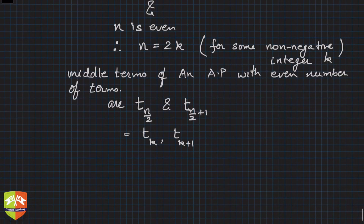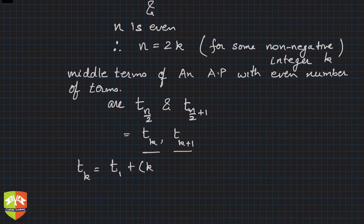So, friends, t_k will be from our basic definition of nth term: t_k = t_1 + (k-1)d, where t_1 is equal to first term and d is the common difference.